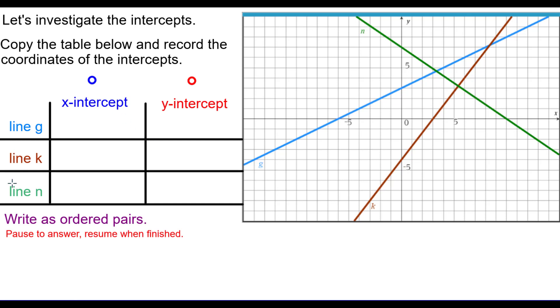We'd like to investigate the intercepts so that you understand them more generally. So what we'd like you to do is copy this table onto your paper. Record the coordinates of the X intercept for each and the Y intercept for each. Pause to answer this and resume when you're finished. So please do so. All right, so hopefully you did that. So we're going to show that line G has an X intercept at negative 6, 0 and a Y intercept at 0, 3. Line K's X intercept is at 3, 0 and a Y intercept at 0, negative 4. And the green line N, X intercept 10, 0, Y intercept 0, 7.